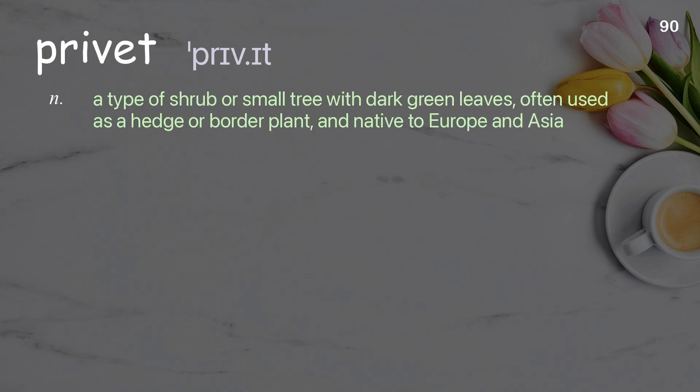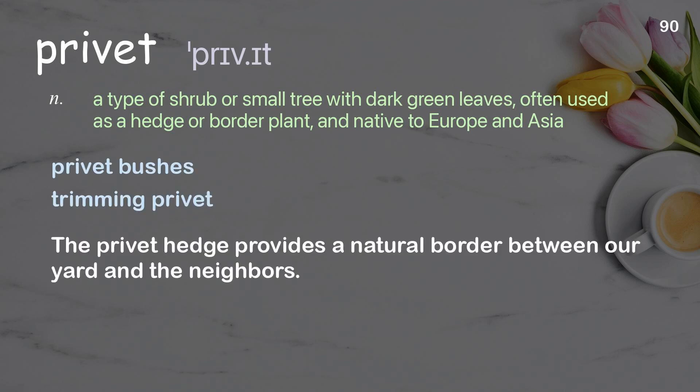Privet: A type of shrub or small tree with dark green leaves, often used as a hedge or border plant, and native to Europe and Asia. Examples: Privet bushes, Trimming privet. The privet hedge provides a natural border between our yard and the neighbor's.